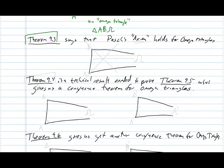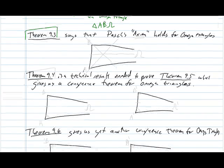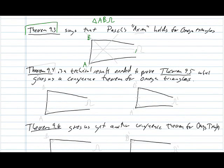Theorem 9.3 gets us started, which says that Pasha's axiom holds for omega triangles. So if we have an omega triangle AB omega, Pasha's axiom says that if a line enters the interior of a triangle on a side, then it must exit the triangle on one of the opposing sides. And if it enters at a vertex, it must exit the opposite side. So that turns out to still be true. It requires some proof. So even though it's called an axiom here, we are far enough outside of that context that we need to prove what's going on.